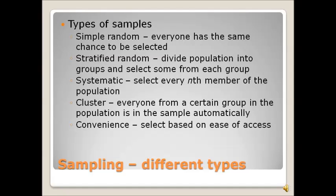In cluster sampling, we sort out the population into groups and then everybody from a certain group in the population is in the sample automatically. So this may or may not be as good as a random sample, a simple random or a stratified random sample, but it still gets, you hope, a pretty good section of people.